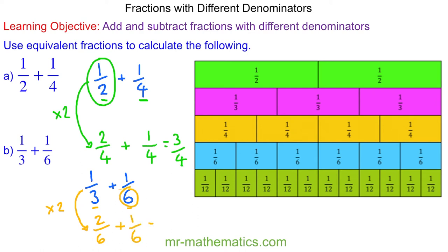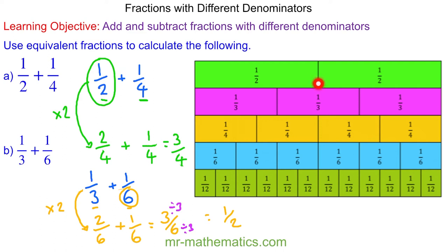So we have two sixths and one sixth, which is three sixths. We can simplify this fraction by dividing both by three, which is the highest common factor of three and six, giving us one half. We can check this works: one third plus one more sixth gives a total of three sixths, which is equivalent to one half.